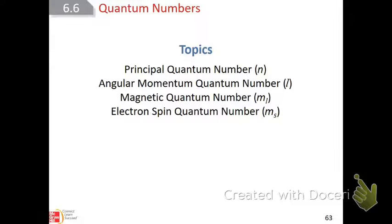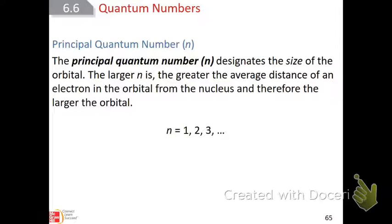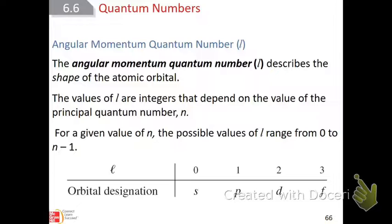There are three quantum numbers we're going to talk about. The n, the principal quantum number, simply means the energy level the electron is in — how far it is from the nucleus. First energy level would be n=1, the second would be n=2, and so on. The second is the spin of the electron. And then, very importantly, the orbital designation — the actual shape of the orbital.